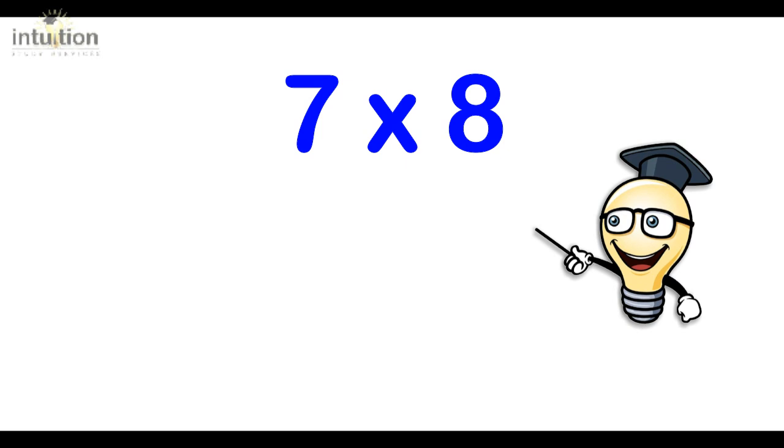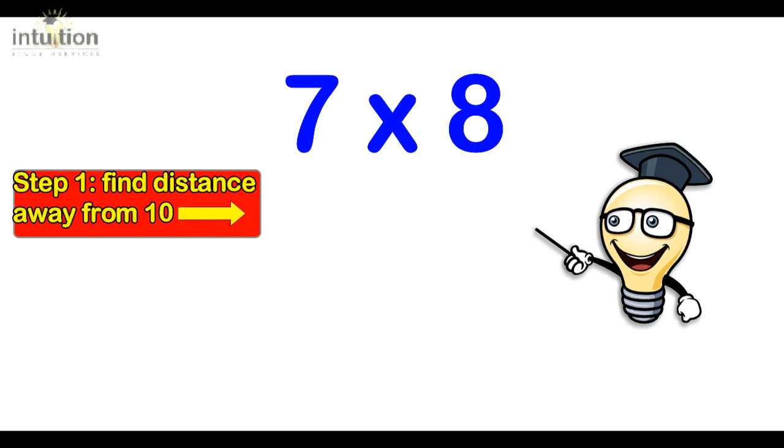Okay, so let's consider an example. Let's consider 7 times 8. To work this out easily, what we do first is we find out how far each number is away from 10. So that's the first step. So we know that 7 is 3 away from 10 and 8 is 2 away from 10. These numbers 3 and 2 are known as the complements because 3 complements with 7 to make 10 and 2 complements with 8 to make 10.